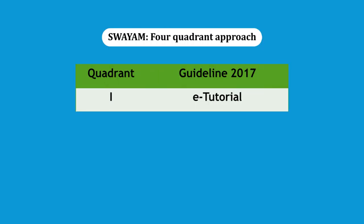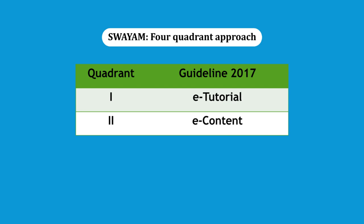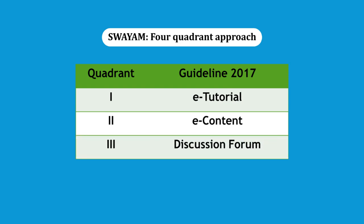The first quadrant is e-tutorial. It contains video and audio content in an organized form. It also includes animations, simulations, video demonstrations, virtual labs, etc. The second quadrant is e-content. It contains PDFs, text, e-books, illustrations, video demonstrations, documents and interactive simulations wherever required. In a way, it supplements the first quadrant. The third quadrant is web resources. It contains related links, related development of courses, open source content on the internet, case studies, books including e-books, research papers and journals, anecdotal information, historical development of the subject, articles, etc.